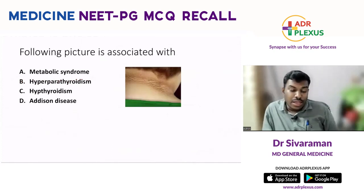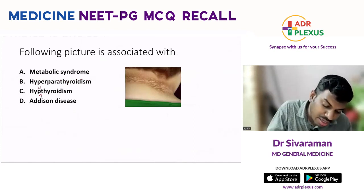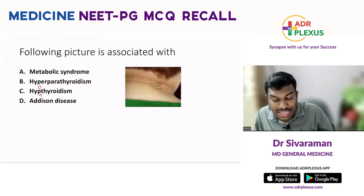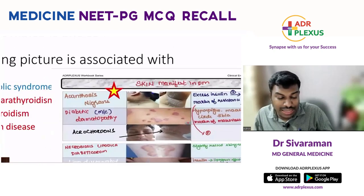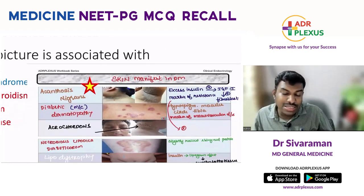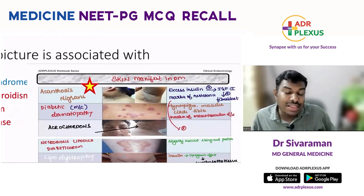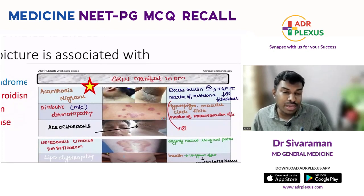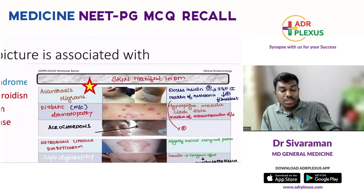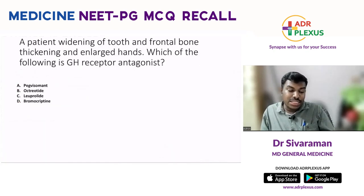A picture shown is associated with metabolic syndrome, hyperparathyroidism, hypothyroidism, or Addison's disease. The striking appearance in the picture is acanthosis nigricans. Acanthosis nigricans is associated with excess insulin and insulin-resistant states, where there is preferential activation of fibroblasts causing skin changes. Acanthosis nigricans is associated with metabolic syndrome, characterized by insulin resistance, hypertension, and dyslipidemia.